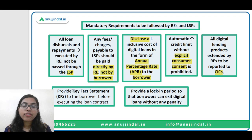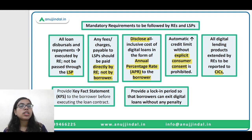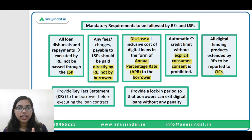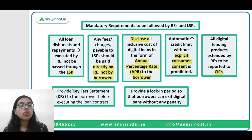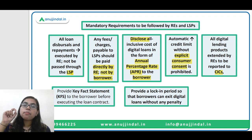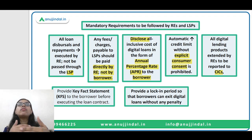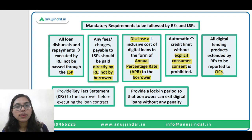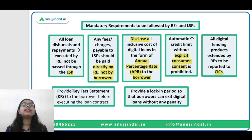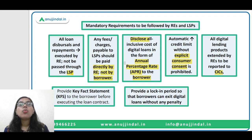Next is providing a Key Fact Statement. Just like a Key Information Document exists for mutual funds - where all information regarding a scheme is provided at one place - similarly RBI is saying that regulated entities need to prepare a Key Fact Statement. Wherein, before executing the loan contract, they will provide each and every minute detail of the loan. So whenever a borrower takes a loan from a regulated entity, that entity needs to provide a detailed document known as the Key Fact Statement, which includes all details related to the loan, including the interest rates being charged and the annual percentage rate.